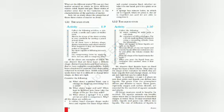When you pour the liquid from one container to another, does it flow easily? We observe that liquids have no fixed shape but have a fixed volume. In a square container the liquid takes a square shape; in a star or oval container, it takes that shape. Liquids do not have their own shape — they take the shape of the container in which they are kept. Liquids flow and change shape easily, so they are not rigid but can be called fluid.